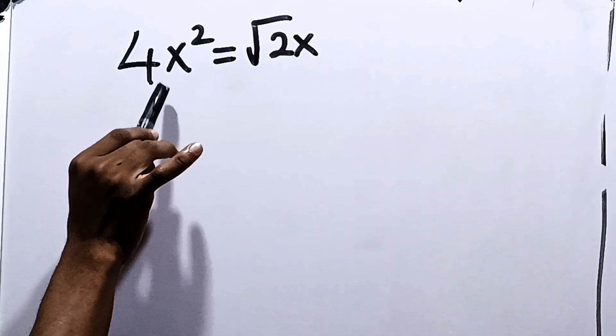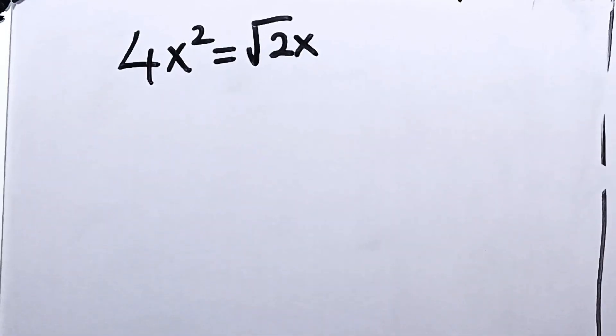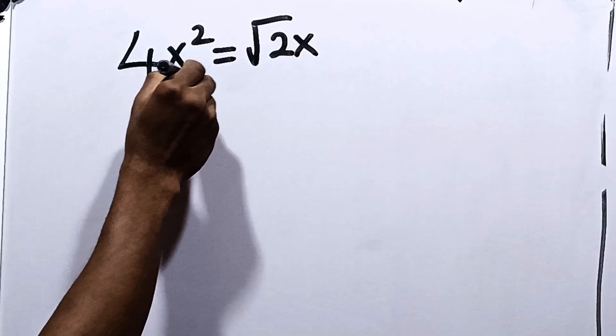Let's solve this together. It says 4x squared is equal to root of 2x. We are required to solve for the value of x in this equation.